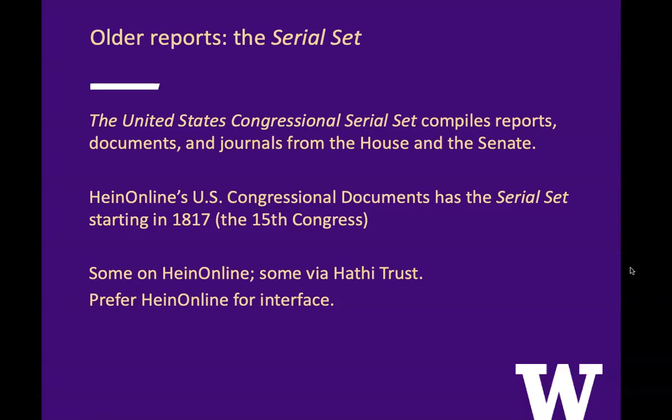To find older reports, we can use the serial set, and that's available in different places, but I'm going to show you HeinOnline. The serial set compiles reports, documents, and journals from the House and the Senate. HeinOnline's coverage starts in 1817, the 15th Congress. If you need to go older than that, it's possible, but let's just start with HeinOnline.